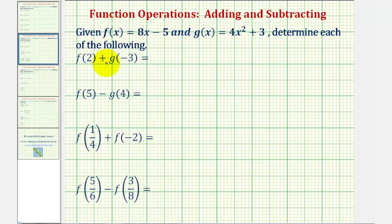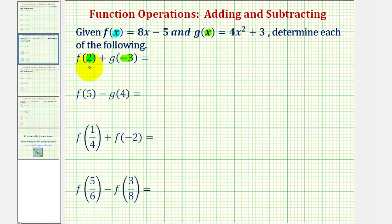We first have f of two plus g of negative three. We need to find f of two, which will be the output of function f when the input is two. To find this output, we'll substitute two for x in function f. And then we'll find g of negative three by determining the output of g when the input is negative three. To find this output, we'll substitute negative three for x in function g. Once we find these function values, we'll then find the sum.